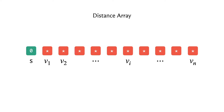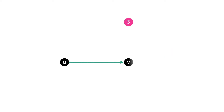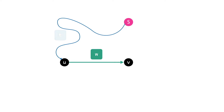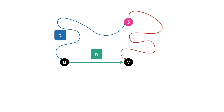Now let me introduce the concept of a tense edge, which is a notion that keeps coming up in many shortest path algorithms. We have a source vertex and an edge from u to v whose weight is w. We have some current understanding of how to get from the source to vertex u, reflected in the distance array with value t, and similarly a value d for vertex v representing our current best known path cost to v.